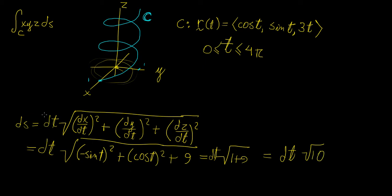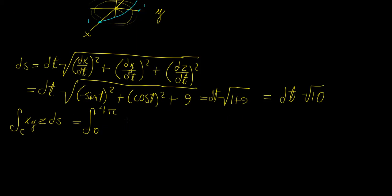Now we substitute all those parametric equations into the integral. Our integral goes from 0 to 4π. We substitute x = cosine t, y = sine t, z = 3t, and ds = square root of 10 dt. So the integral becomes the integral from 0 to 4π of cosine t · sine t · 3t · square root of 10 dt.